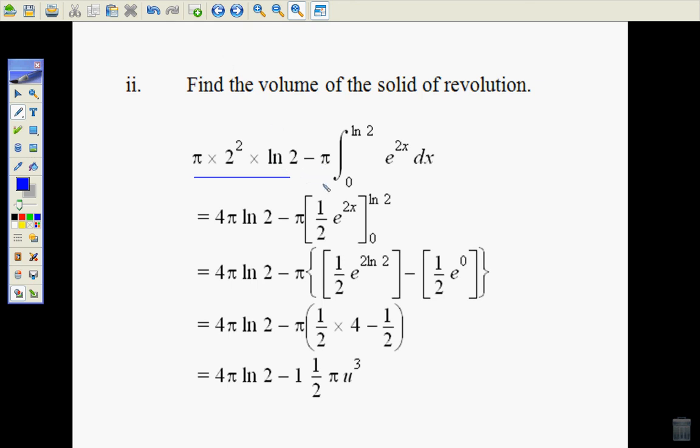And then we're going to subtract pi times e to the power of x all squared which would be e to the 2x. We've used the idea that it's y squared and y was e to the power of x so that's why it's squared and becomes 2x, between 0 and natural log of 2. So e to the 2x integrates to a half e to the 2x, and the pi stays out the front.